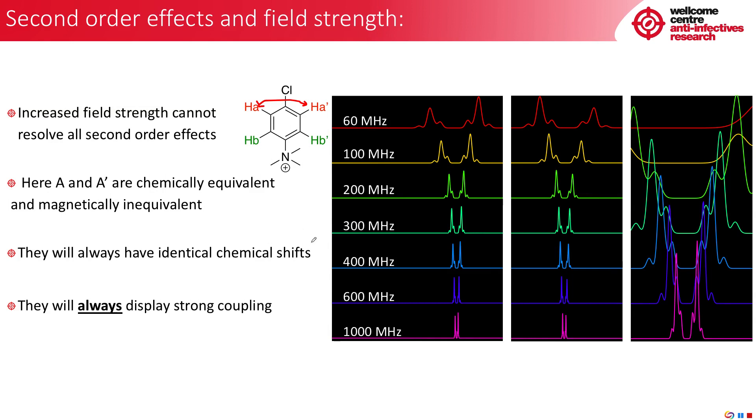And again, we can demonstrate this by simulation. We can see for our 60 megahertz signal, our quite distinctive standard second order shape for one of these signals. And as we go from 60 all the way down to 1000 megahertz, you see the signal gets a great deal narrower. But actually, if we blow up over here, you look, although it's sharper, the shape of this signal, even at 1000 megahertz, it's actually the same. These will always give a second order effect.